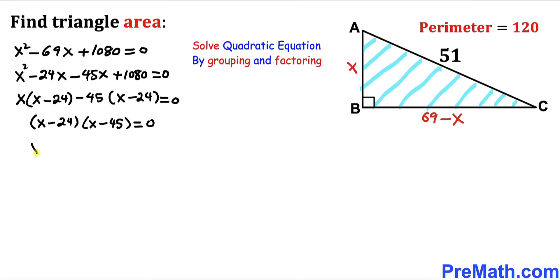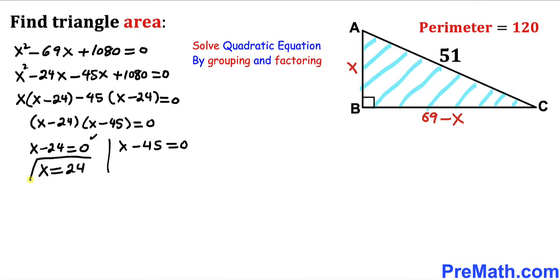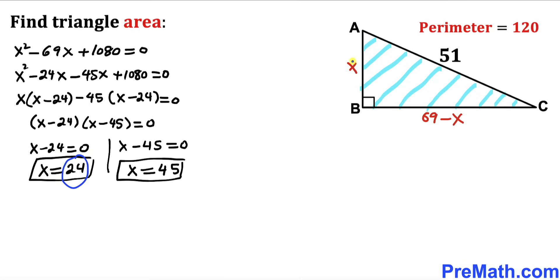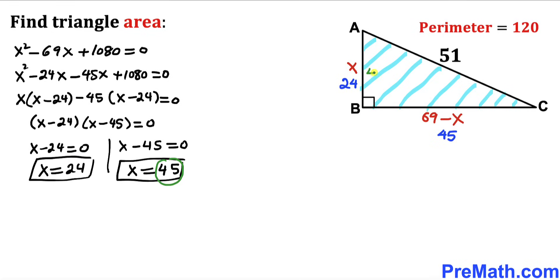Factoring out the common factor (x minus 24) gives (x minus 24)(x minus 45) equals 0. Separating the two factors: x equals 24 or x equals 45. If x equals 24, then the other side is 69 minus 24 equals 45. If x equals 45, the other side is 69 minus 45 equals 24. Both scenarios are feasible and give the same pair of side lengths: 24 and 45.